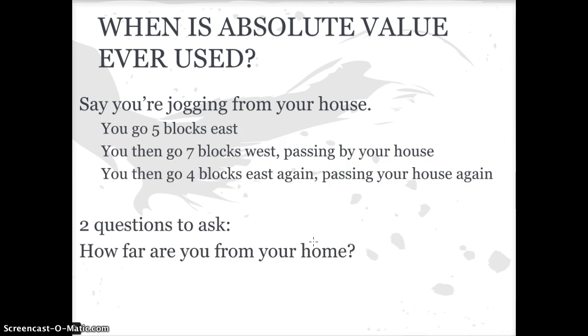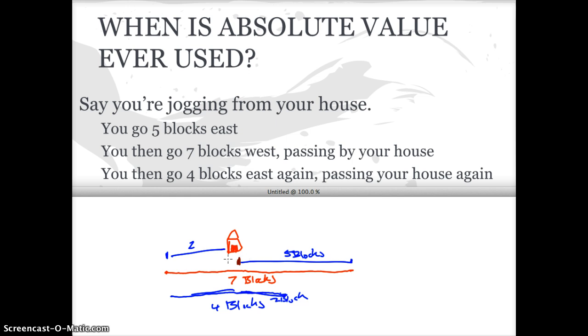But if I'm two blocks away from my house, the other question I can ask is how far have you traveled? Which is the absolute value. I didn't really add these numbers together for the first question because I did five minus seven plus four, which ended up giving me two. But if I took the absolute value of each one of these—five plus seven plus four—that's going to give me a total amount, which is 12, 16 blocks total.